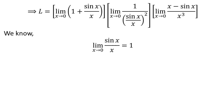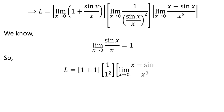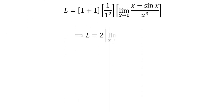We know the limit of sin of x upon x as x approaches 0 is equal to 1. The limit has been proved in a linked video. Application of the above fact gives us L is equal to 1 plus 1 times 1 upon square of 1 times limit of x minus sin of x upon cube of x as x approaches 0. Further simplification gives us L is equal to 2 times limit of x minus sin of x upon cube of x as x approaches 0.